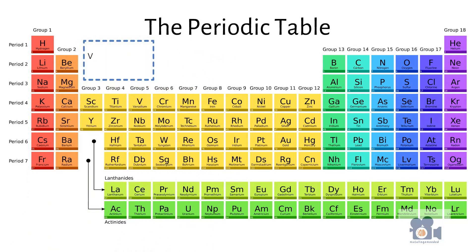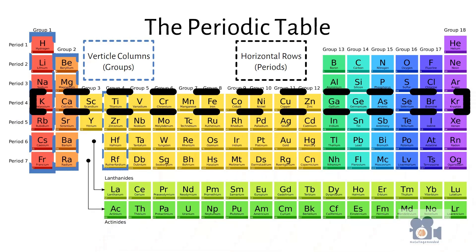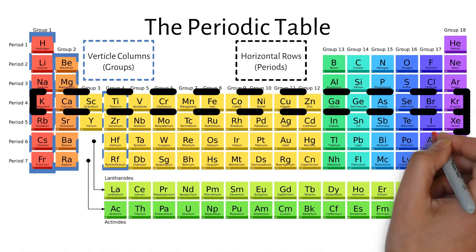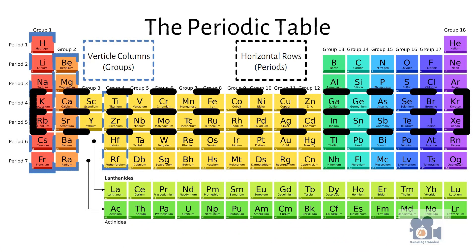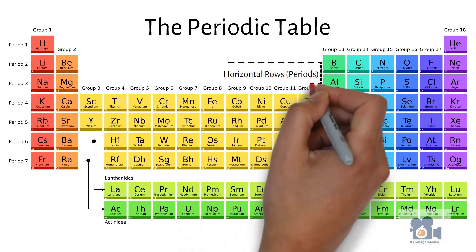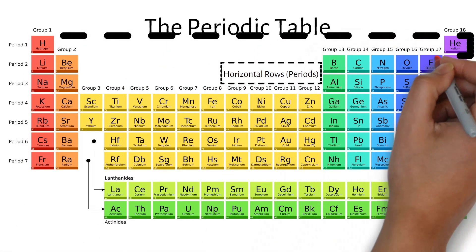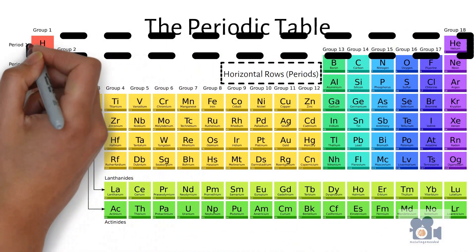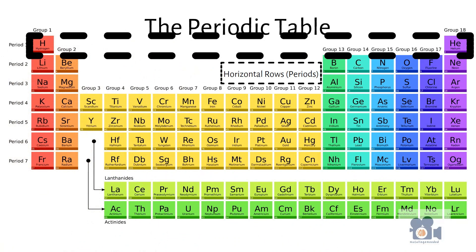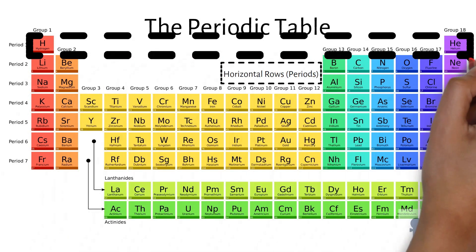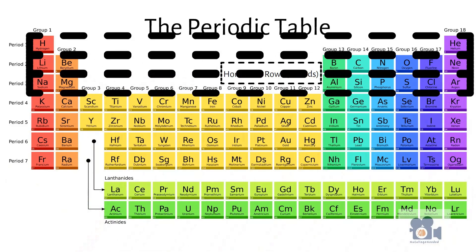The periodic table organizes elements into vertical columns called groups and horizontal rows called periods based on their electron configuration and chemical properties, allowing scientists to make predictions about the properties of elements that have not yet been discovered. The first period or row only contains two elements, hydrogen H and helium HE. This first row only has one electron shell, which will go into more depth in future units. As you go down periods or rows to the second and third, an additional electron shell is added to the atom.